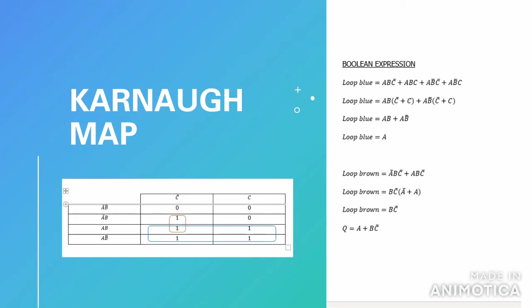We are using K-map to simplify our Boolean expression, and we get the output Q equals A plus B NOT C.